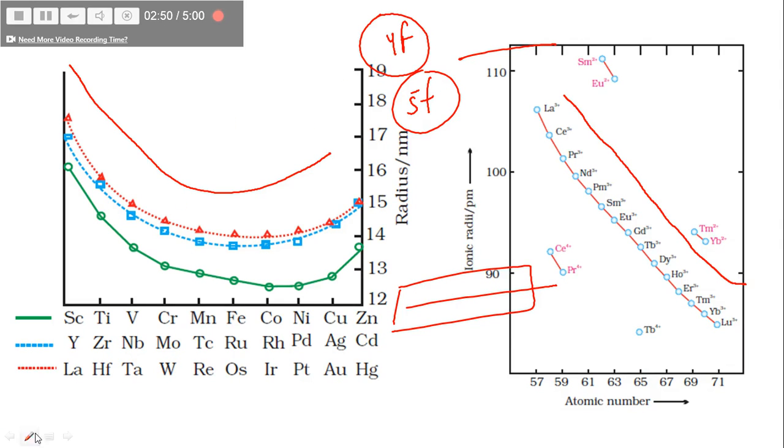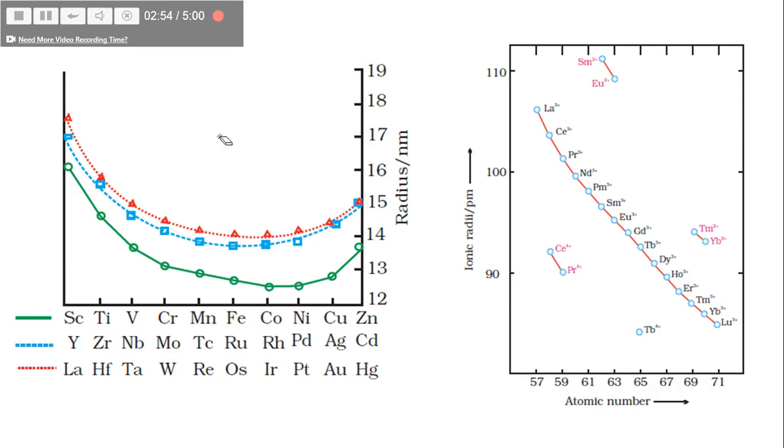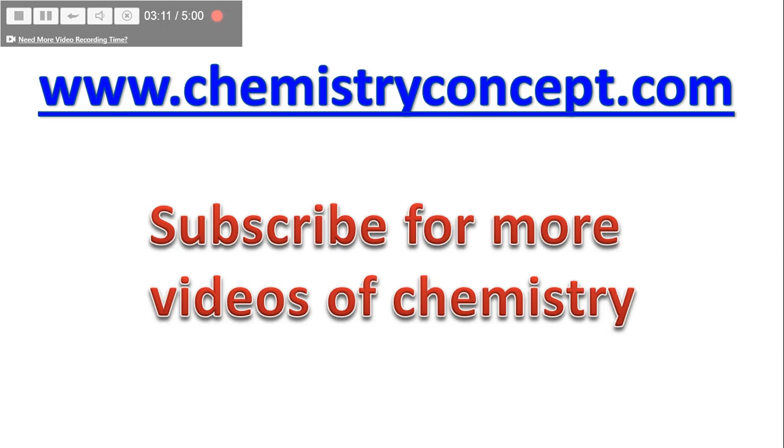This is because of the weak shielding effect of f electrons. One reason is that zirconium and hafnium have almost similar sizes—one is from the 4d series, another from the 5d series. The 4d and 5d series elements have almost similar sizes because of this lanthanoid contraction.